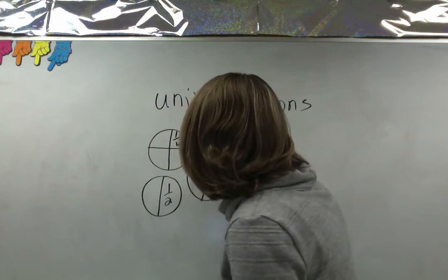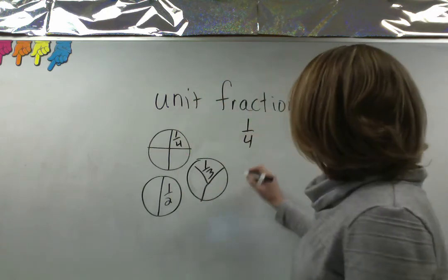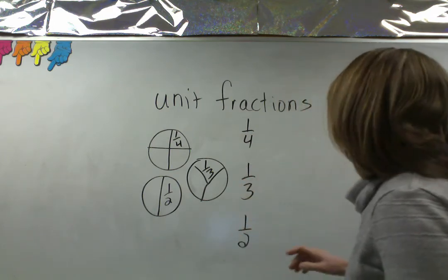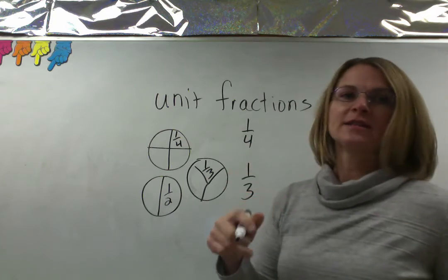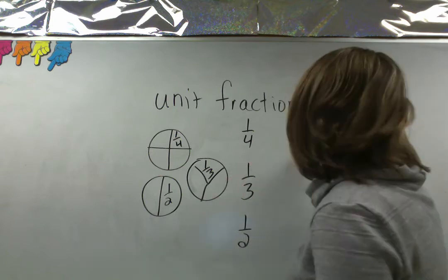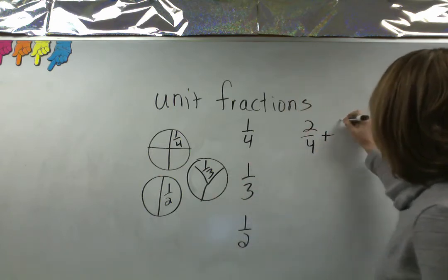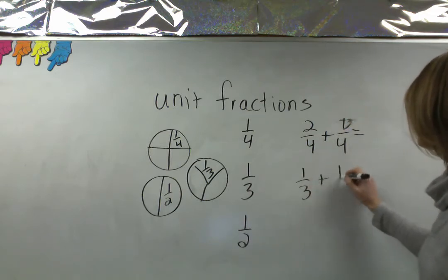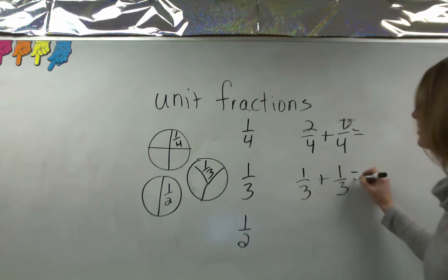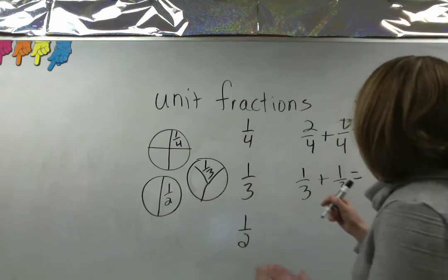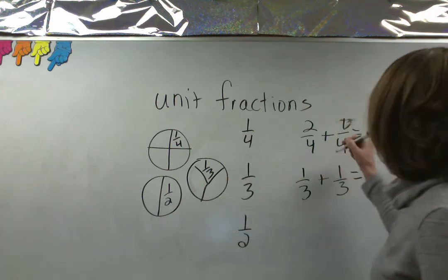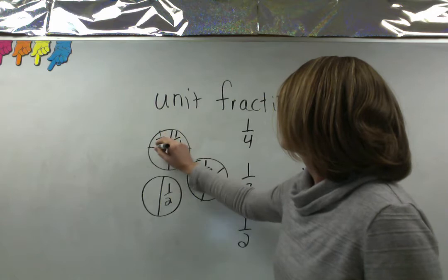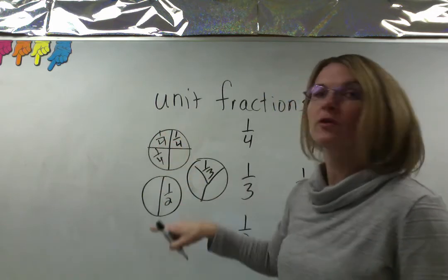So let's make thirds. My unit fractions: here is a fourth — that's one size; here is a third — that's another size; and here is a half — that's another size. When adding fractions, I can add fractions that are the same size. I can add fourths to fourths. So two fourths and one fourth is a total of three fourths.